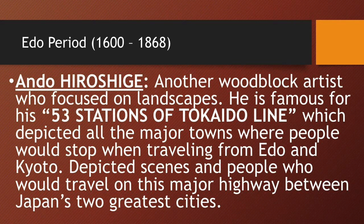Ando Hiroshige is another woodblock artist who is very famous. He also focuses on landscapes, but instead of Mount Fuji, he's famous for the 53 Stations of the Tokaido line. The Tokaido line is a highway — there were no cars at the time, but it was a road people traveled connecting Edo, the shogun's city, with the capital of Kyoto. Daimyo doing alternate attendance, for example, would need to use the Tokaido road to get from Kyoto to Edo.